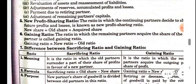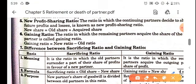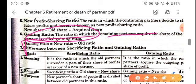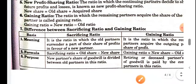Now comes gaining ratio. Gaining ratio is the ratio in which the remaining partners acquire the share of the retiring partner. The formula for gaining ratio is: new ratio minus old ratio.